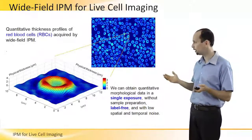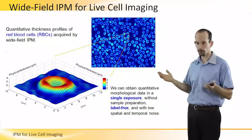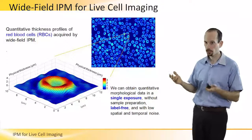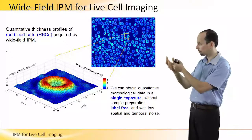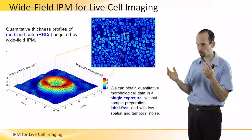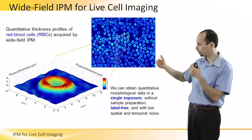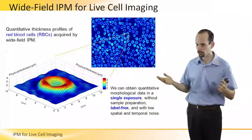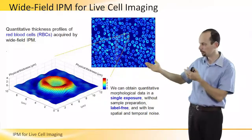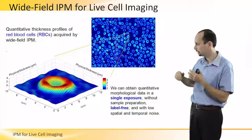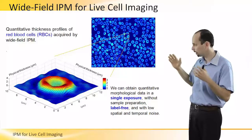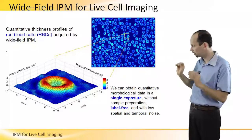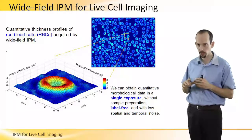As an example, you can see here Wide-Field Interferometric Phase Microscopy, IPM, for live cell imaging. Using one off-axis hologram, I can process it into the phase profile of the sample, without using any contrast agents. I can see the red blood cells in this example without using any external labeling, and still get excellent contrast between the entire cell and its surrounding.